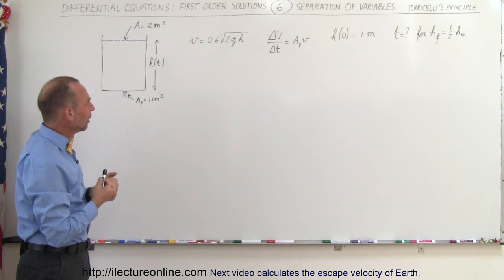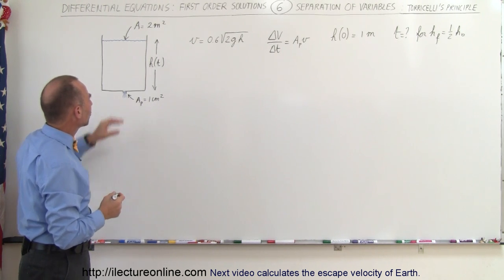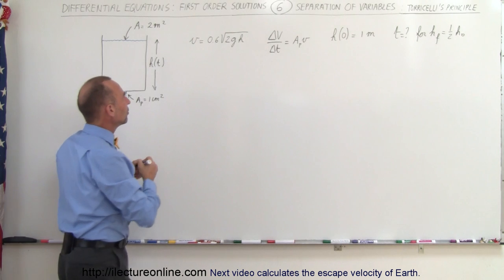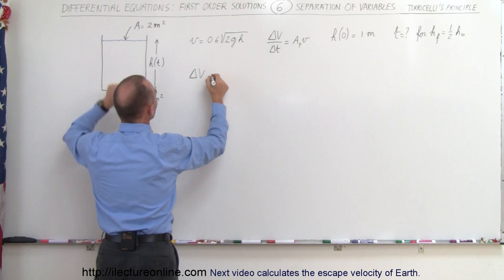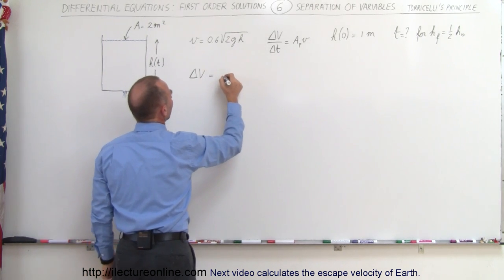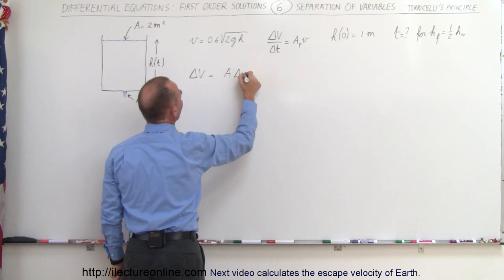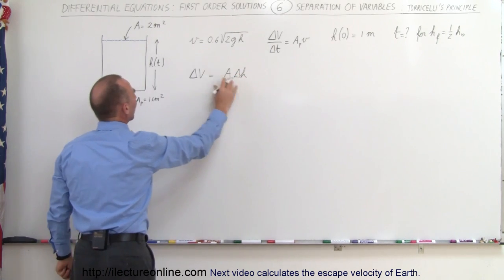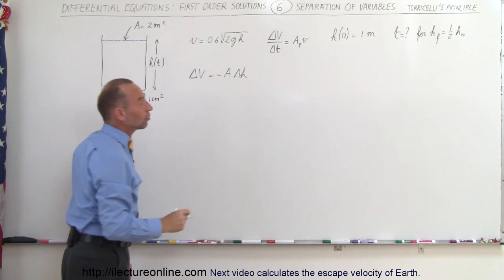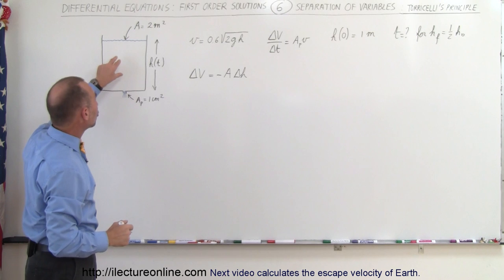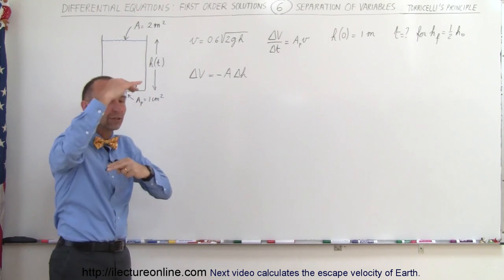So we need to come up with some sort of equation to define the relationship between height and time. One thing we can write is that the change in the volume of the water in the barrel is going to be equal to the cross-sectional area times the change in the height. Now notice, as the height goes down, the volume decreases, so you need to have a negative sign right there. So there's another relationship: the change in volume can be related to the cross-sectional area of the barrel and the change in the height of the water level.